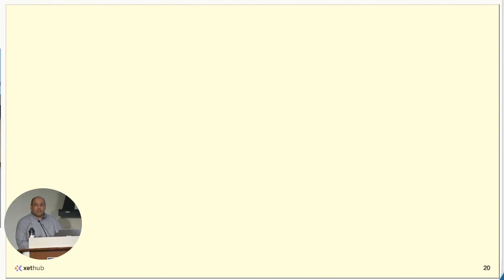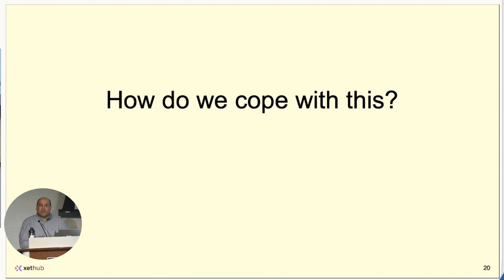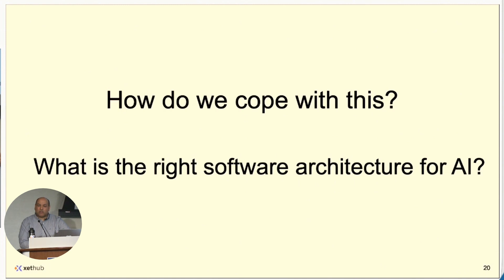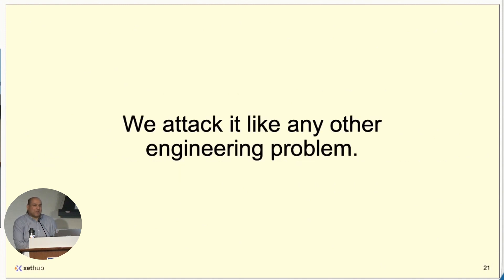Things are going to keep changing. As you're thinking about building AI applications, you can't get locked into one set of techniques because we're too early in this AI disruption. As an organization or as a business, how do we think about the right architecture for AI? How do we go about getting started in a world where things are immature and the techniques may not be the same ones in three to five years? Well, I think we attack it like any other engineering problem. I have four principles.